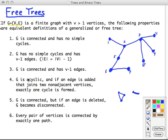Another definition: G is acyclic. There's no cycles, but if you add an edge that joins any two non-adjacent vertices, that is vertices that don't already have an edge between them, exactly one cycle is formed. There's no way to add an edge in here without forming a cycle, and it will form exactly one cycle.